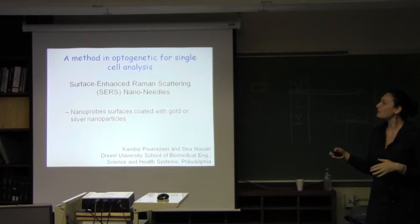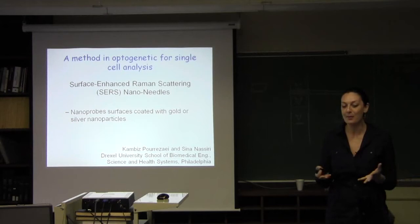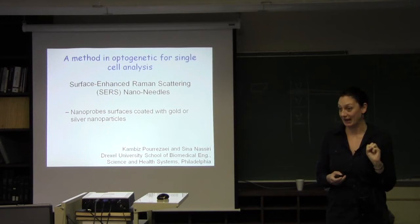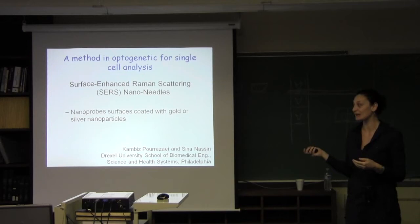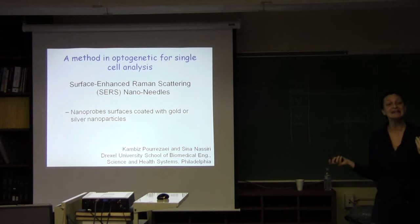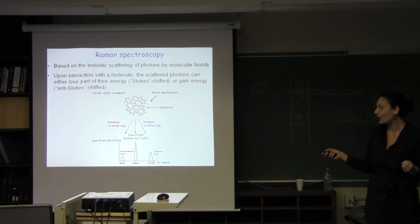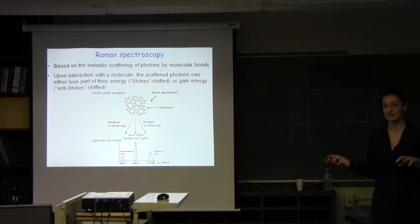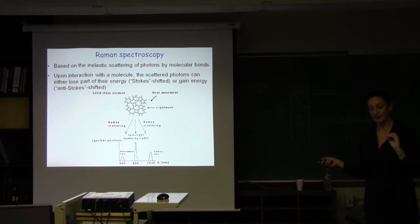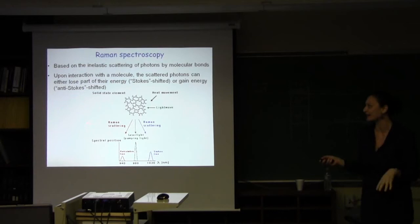One of the methods that with Alan and in the lab we are interested in looking at is a specific method in optogenetics: surface-enhanced Raman scattering nanoneedles. Those are nanoprobes that are coated with gold and silver nanoparticles. As I told you before, those will work as a sensor.